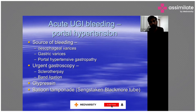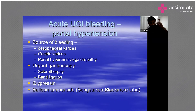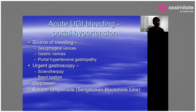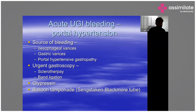If band ligation or sclerotherapy cannot control bleeding, the next modality is balloon tamponade. The Sengstaken-Blakemore tube can be a last-ditch effort, though it's used less nowadays with the advent of radiological procedures.